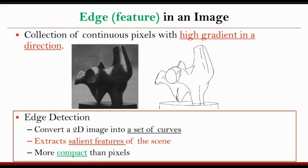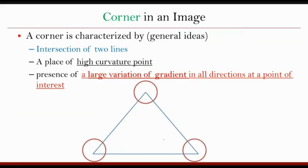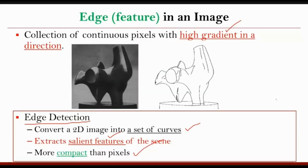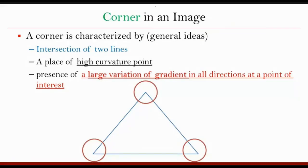How did we define edges in the previous class? We defined edges as the pixels in the image where the image intensity gradient was high. When we do edge detection, the process converts a given 2D image to a set of curves, and these curves in some sense represent salient features of the scene. The edge image gives the representation of a scene in a more compact way. In case of edges, the gradient is high in a particular direction — please remember this.